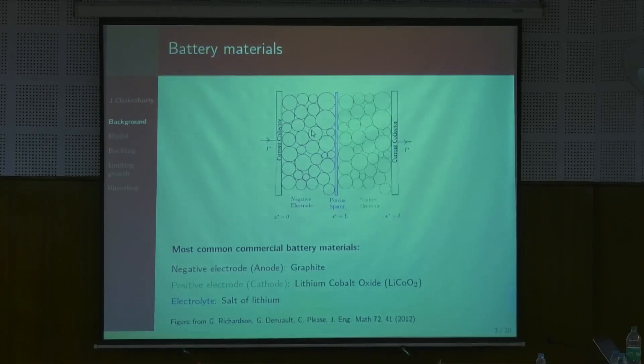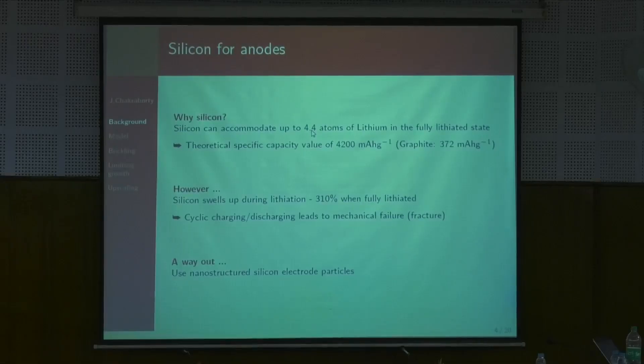The anode is basically a mixture of the active material, which can be graphite or other materials, as well as some conductive material and binder. What I will focus on is one particle of silicon. Why silicon? The most immediate answer is that it can take up more than 10 times the amount of lithium compared to graphite. But this ability to absorb so much more lithium also poses the biggest engineering challenge, because when it takes up so much lithium, it swells immensely by volume.